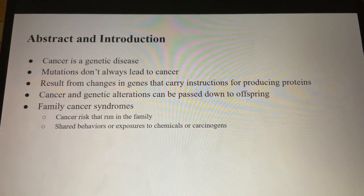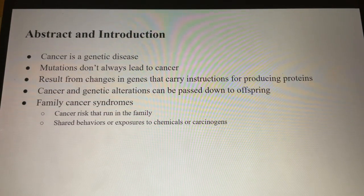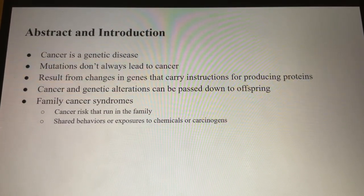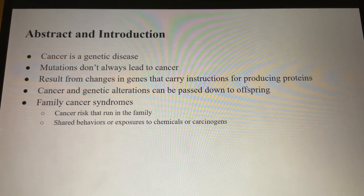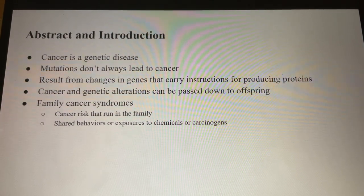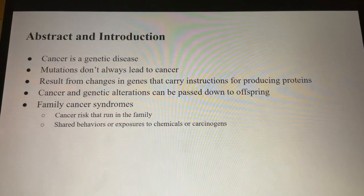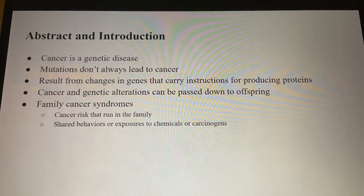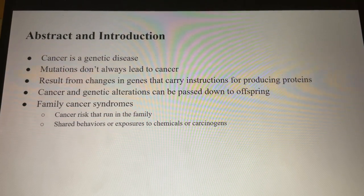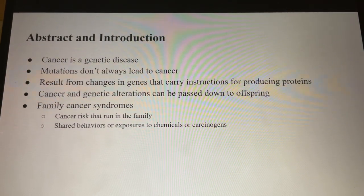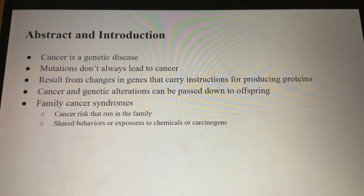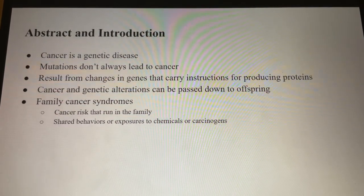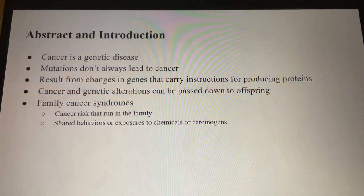Cancer results from changes in genes that carry instructions for producing one or multiple proteins. Researchers have identified numerous alterations in DNA sequences that contribute to cancerous cells' onset, growth, and proliferation. The potential reasons behind the changes in DNA include random errors during cell division, carcinogens in the surrounding environment such as chemicals, UV light, and HPV, and inherited genes from one of the parents.